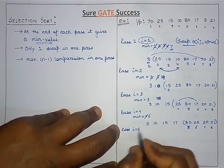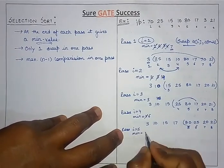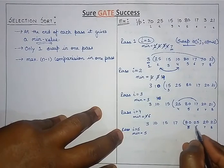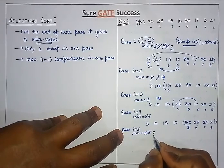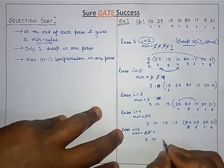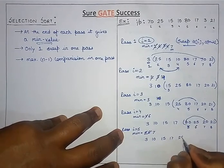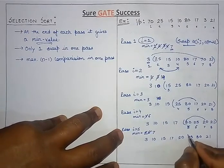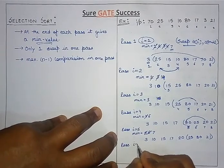At the 5th pass, minimum search starts from position 5 onwards. 80 is the initial minimum. Then 25 is the minimum, then 20 is the minimum — replacing at position 7. We replace the 5th value with the 7th value. The array becomes: 3, 10, 15, 17, 20, 25, 80, 21. Five values are now sorted.